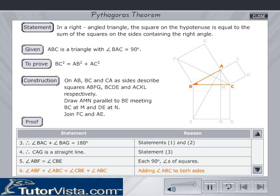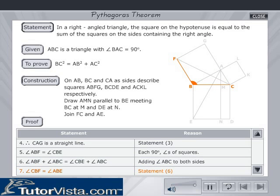Adding angle ABC to both sides: angle ABF + angle ABC = angle CBE + angle ABC. This means angle CBF = angle ABE in triangles CBF and ABE.